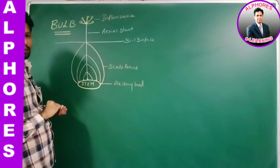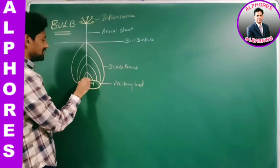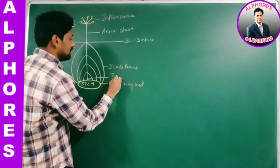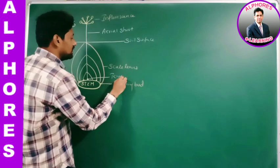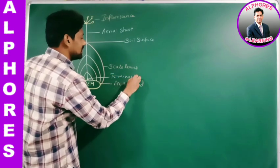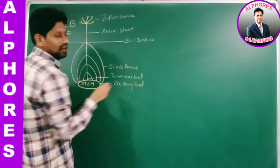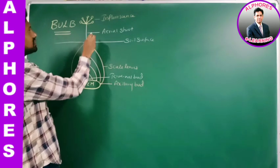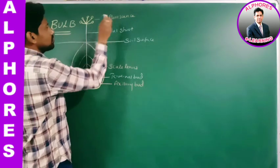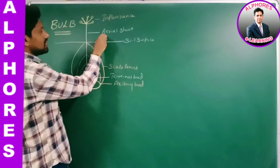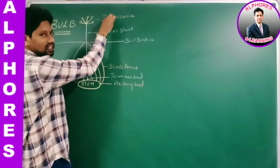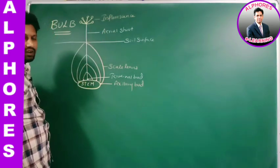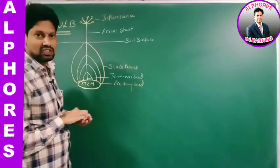See this statement carefully. The terminal bud, also called the apical bud, develops into an aerial shoot. This aerial shoot bears an inflorescence. This aerial shoot with inflorescence is called a scape.